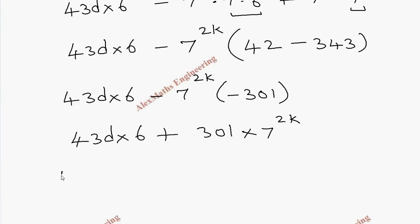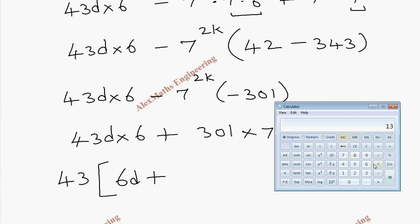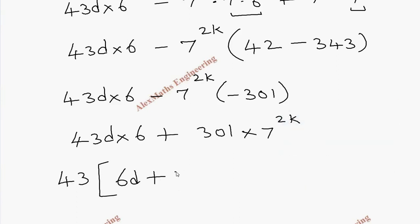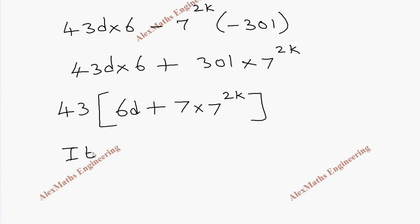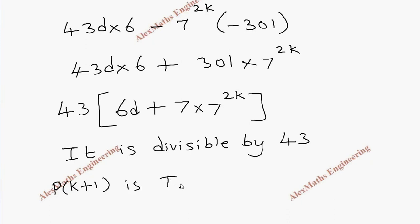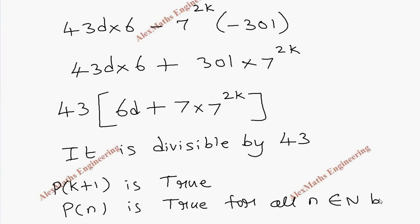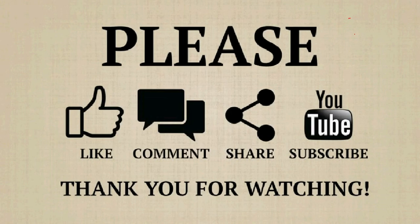Now we can take 43 common from the entire expression. The first term gives 6d, and dividing 301 by 43 gives 7, leaving 7 × 7^(2k). So the whole expression equals 43 × (6d + 7^(2k+1)). Since the entire expression has 43 as a factor, it is divisible by 43. Therefore P(k+1) is true, and P(n) is true for all n belonging to the natural numbers by the principle of mathematical induction.